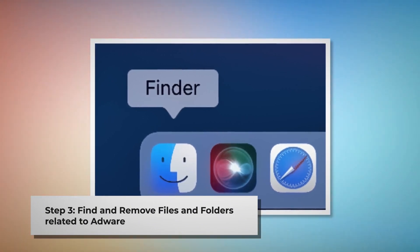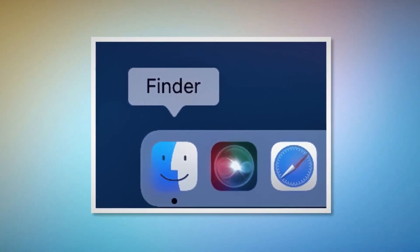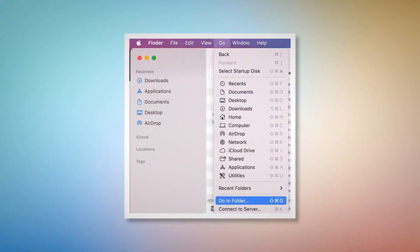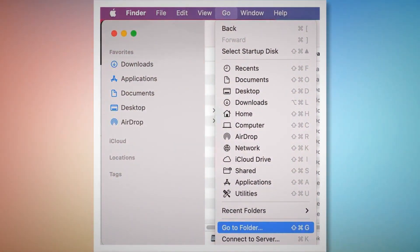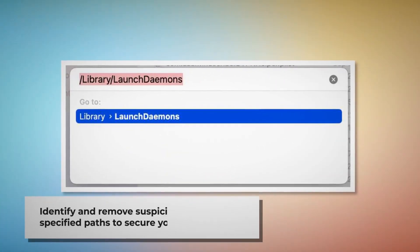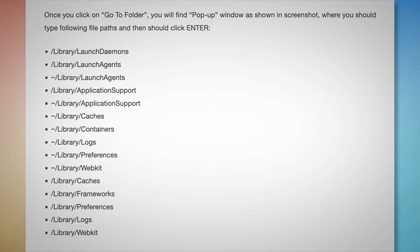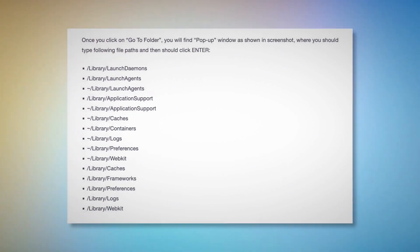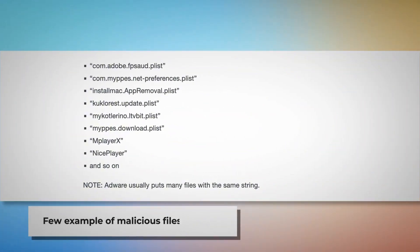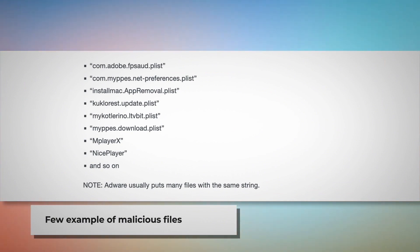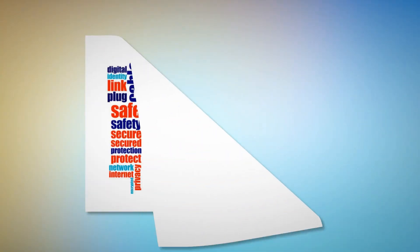Step three: find and remove files and folders related to adware. Make sure you are in the Finder window, then click on Go at the top menu bar and select Go to Folder from the drop-down menu. In the pop-up window, type these file paths and press Enter — paths such as /Library/LaunchDaemons, /Library/LaunchAgents, /Library/Application Support, and so on. Look for suspicious or malicious files and move them to Trash. Note that adware usually puts many files with the same string.